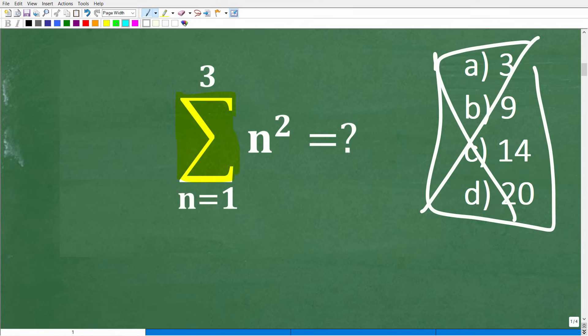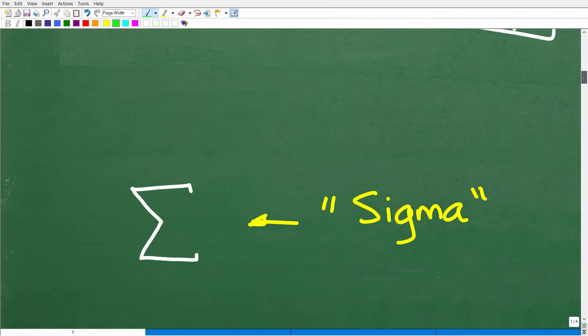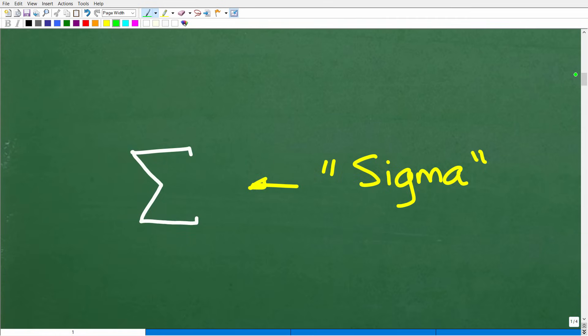Well, let's go ahead and talk about that right now. So this symbol is called sigma. Okay, it's what we call the summation notation. This is a notation, this means something in mathematics. But sigma is, this is the symbol in the Greek alphabet, it's called sigma.